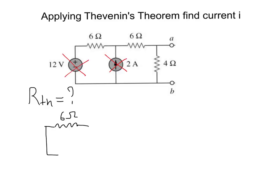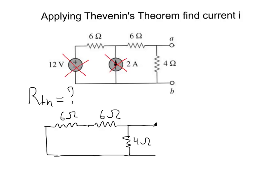Looking at the 2 amp current source — when we switch it off, we create an open circuit, so we don't put any wire there. Continuing, we have the next 6 ohm resistor and also a 4 ohm resistor. Importantly, we need to find the equivalent resistance R Thevenin looking into terminals A and B — that is the place where we find the equivalent resistance.